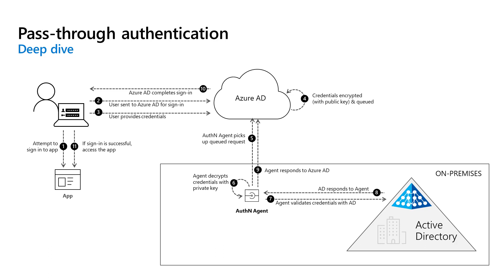Azure Active Directory then evaluates that response and responds to the user as appropriate. For example, Azure Active Directory either signs the user in immediately, or it requests multi-factor authentication, or it takes advantage of conditional access, identity protection, or any of those features. And lastly, if the sign-in is successful, the user can access the application.